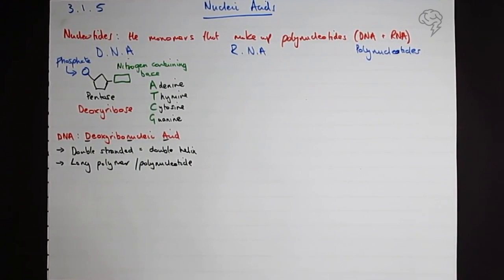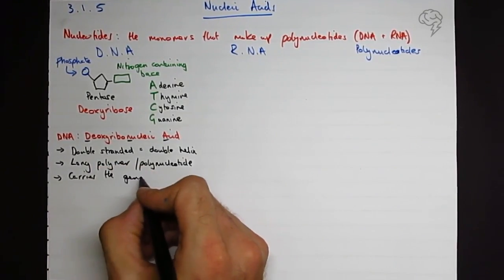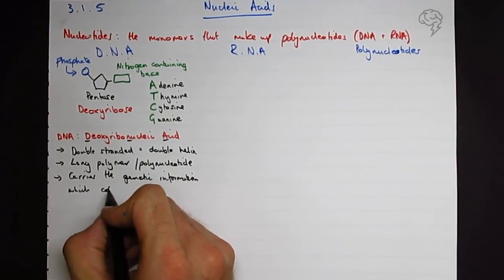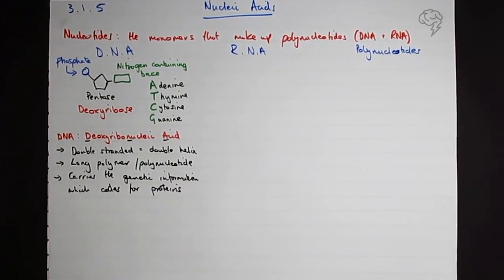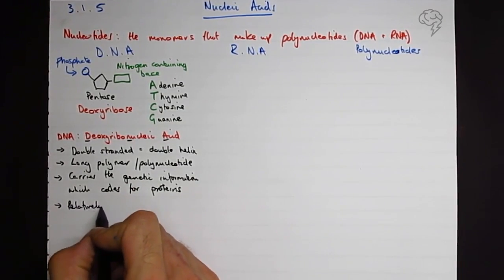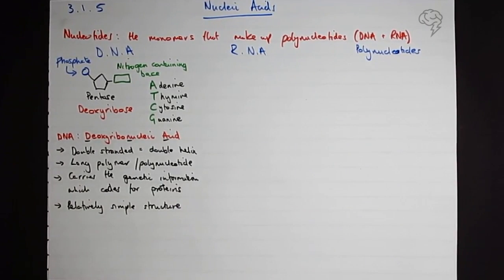It carries the genetic information which codes for proteins. Remember, proteins are the doing molecules - they do things. So the DNA holds the code, which is like the program, the recipe for how to make the proteins. And then the proteins get made and the proteins go and do useful things around the body.